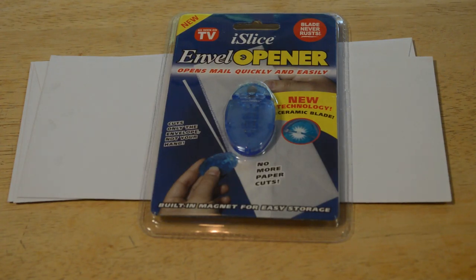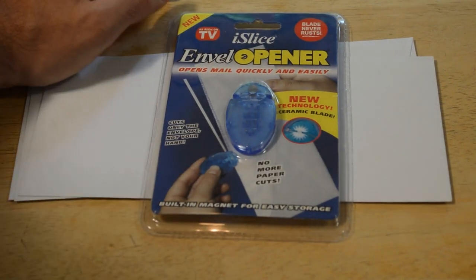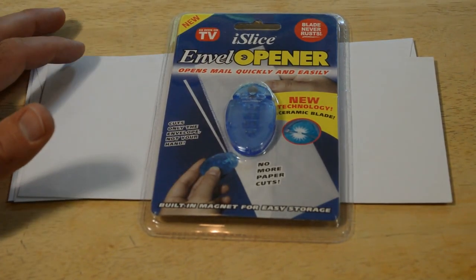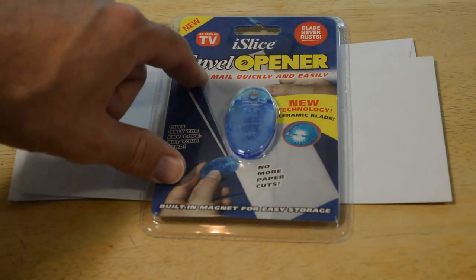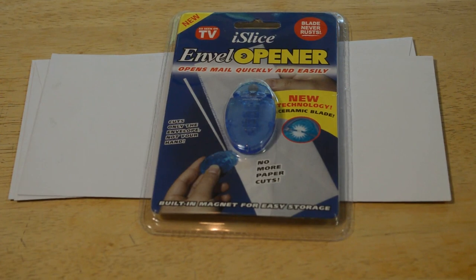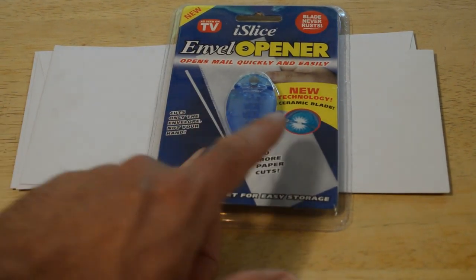So I haven't seen this As Seen On TV item until today, but this is the As Seen On TV Eye Slice Envelope Opener, opens metal quickly and easily, new technology, ceramic blade.